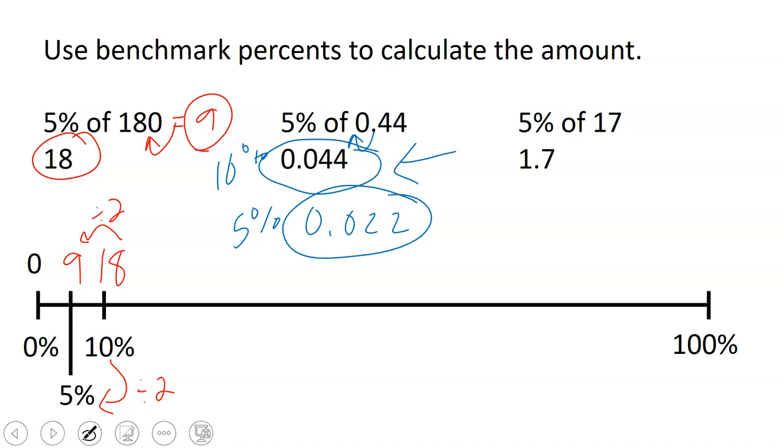And then over here, 1.7, this represents 10%. We found that in the last video. And then to get 5%, I just take the 1.7 and divide it by 2. Now if you ever get to a number that you're not sure what that number is split in half, you can always use long division to divide it by 2.